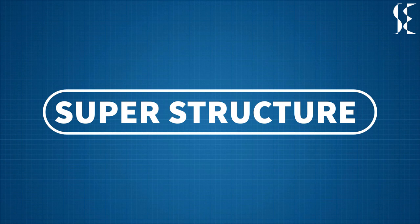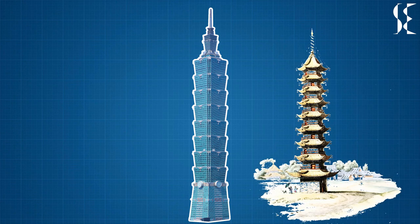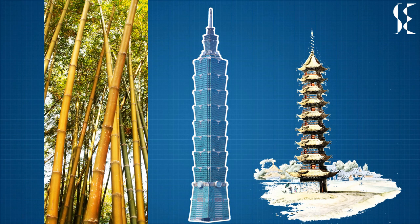Now, let us understand the superstructure of the tower. The building is 508 meters above the ground and resembles ancient pagodas. It takes inspiration from bamboo which is flexible and light, yet strong.